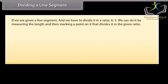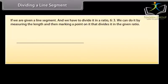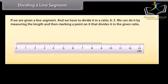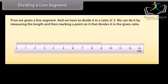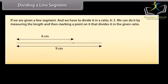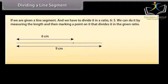If we are given a line segment and we have to divide it in a ratio 6 is to 3, we can do it by measuring the length and then marking a point on it that divides it in the given ratio. But suppose that we do not have any way of measuring it precisely. So we will use the constructions shown in the next screen to divide a line segment in a given ratio. Let's learn.